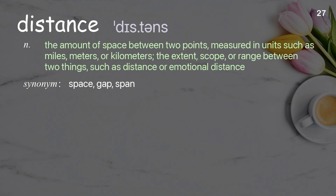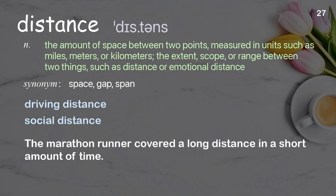Distance: the amount of space between two points, measured in units such as miles, meters, or kilometers; the extent, scope, or range between two things, such as physical or emotional distance. Examples: driving distance, social distance. The marathon runner covered a long distance in a short amount of time.